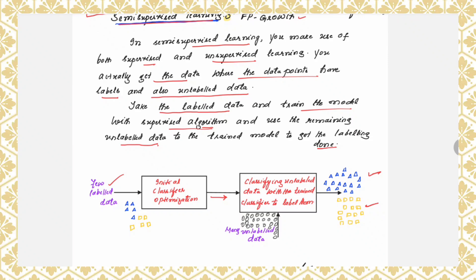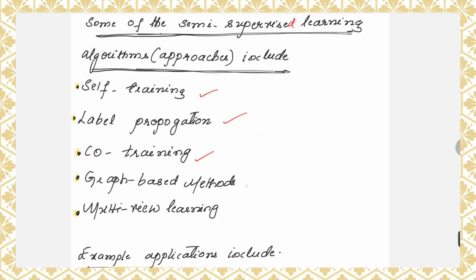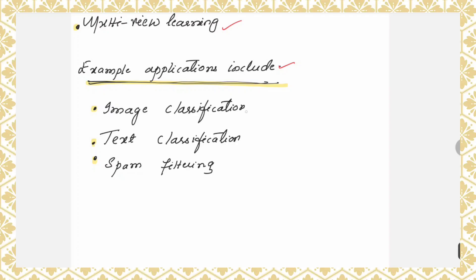This is definitely helpful because getting a labeled dataset is expensive. You can make use of the unlabeled dataset — which you can easily get — along with a few labeled data points to finally get the desired output. Some approaches for semi-supervised learning are self-training, label propagation, co-training, graph-based methods, and multi-view learning. Example applications include image classification, text classification, and spam filtering.